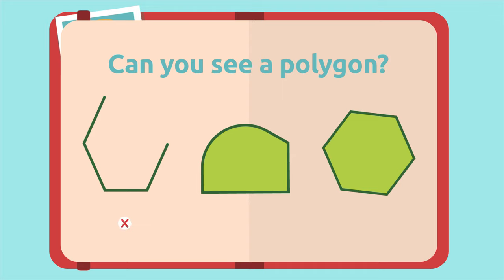The first shape is not a polygon because its polygonal line is not closed. The second shape is not a polygon either because it has a curved side. That's it! The third shape is a polygon because it's formed by a closed polygonal line.